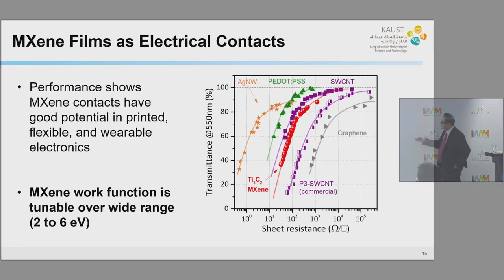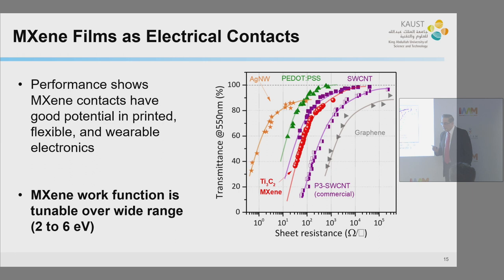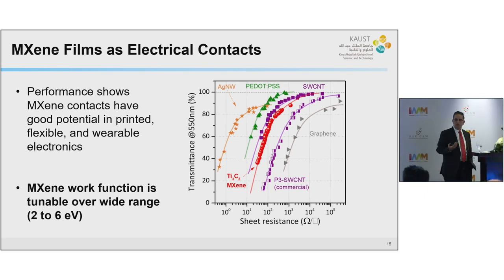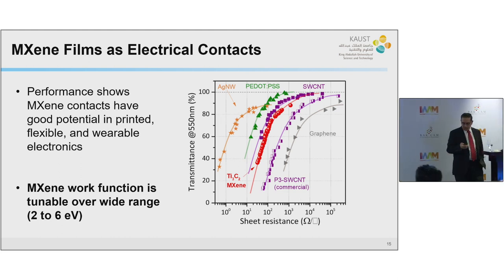Looking at the performance curve for printed electronics and solar cell applications — transmittance versus sheet resistance — the MXene baseline process is comparable to existing materials. What is unique about MXene, if you can control it, is that in principle you can change the work function. So if you have good conductivity with a custom-tunable work function, you could potentially make many types of devices on the same wafer. For example, through photoresist using plasma, you could functionalize the MXene surface and change its work function locally — making multiple types of devices on the same wafer.